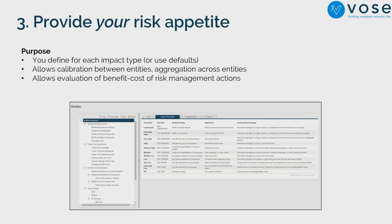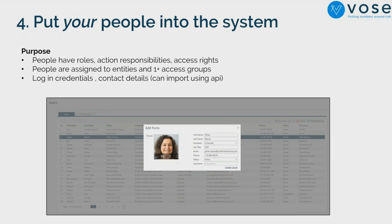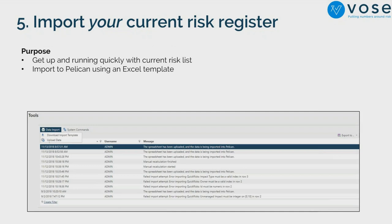Then of course you put your people into the system — either via API or by entering their information manually. People are a critical part of Pelican: they have their own identities as actual people, not just roles, because we assign responsibilities to them. Finally, you import your current risk register — whether it's in a spreadsheet or a qualitative tool like Active Risk Manager. You download the template from Pelican, fill it in with the risks you already have, upload it, and all that data is directly within Pelican.